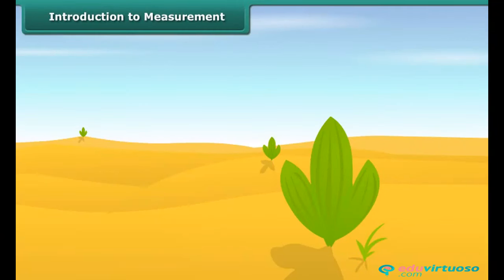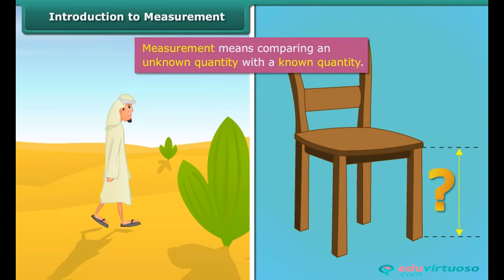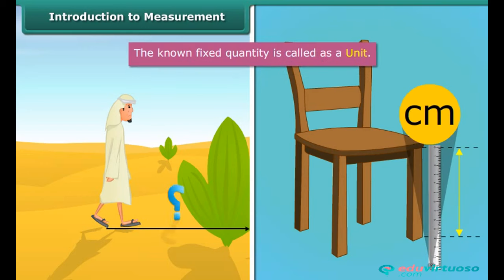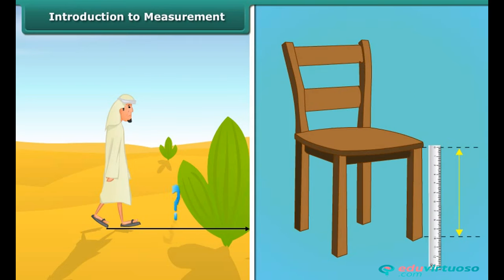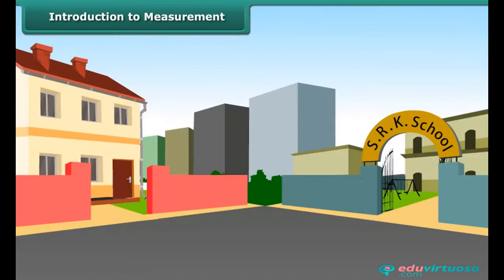Do you know how people know how much they have travelled or how much is the length of a leg of a chair? This is done by using a term called measurement. Measurement means comparing an unknown quantity with a known quantity. The known fixed quantity is called a unit. When you derive the results of this calculation, you get the measurement in two parts — one is a number and the other is the unit of the measurement. You can also calculate the distance from one place to another, for example, the distance from school to your house.